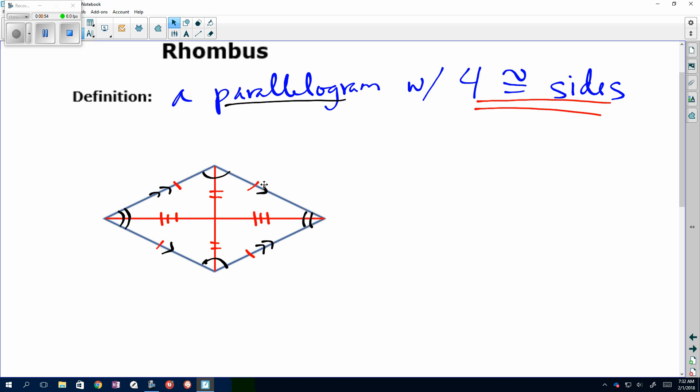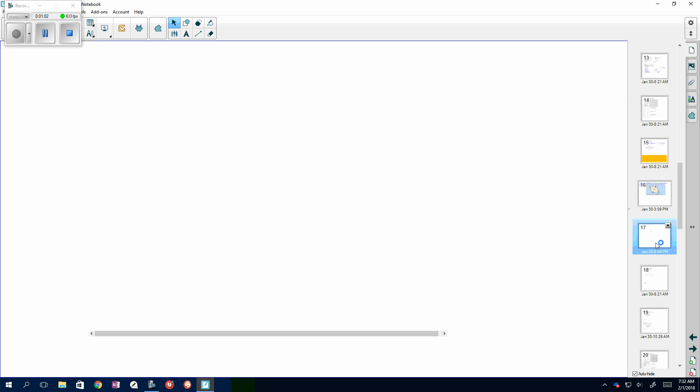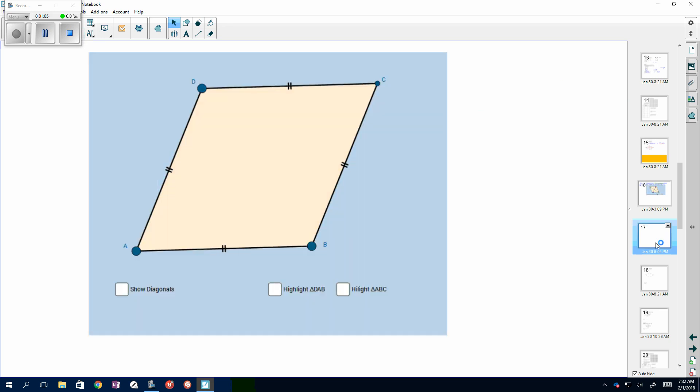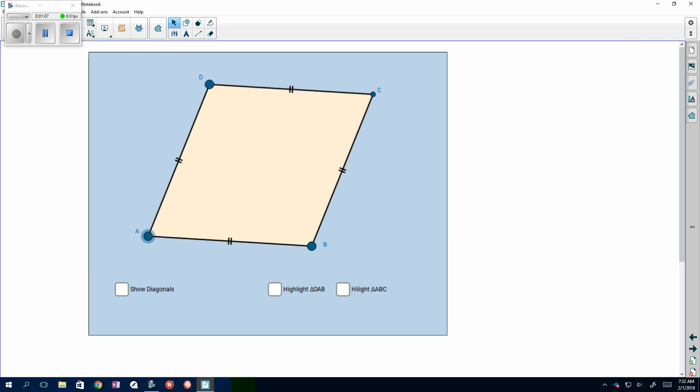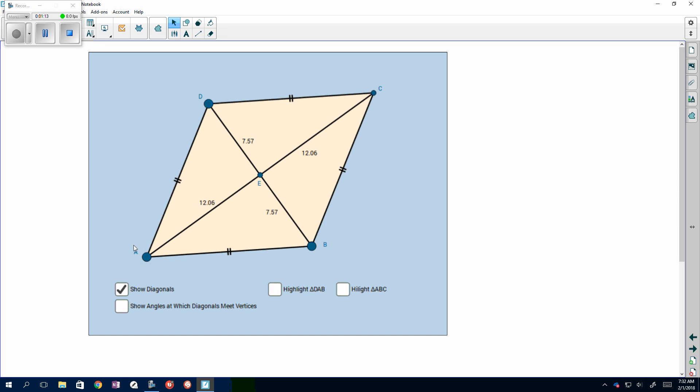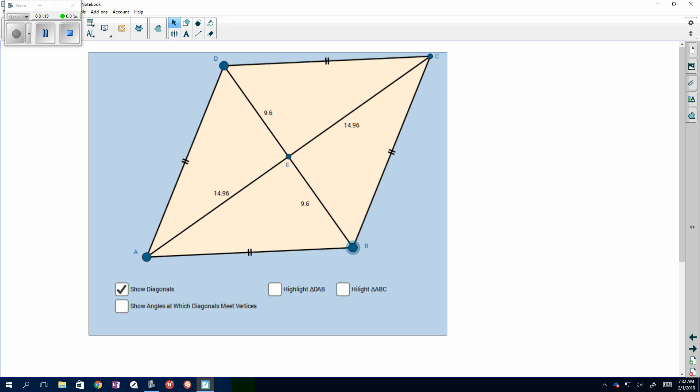Now, the thing that's a little different for a parallelogram, some additional properties, is if we look at this, we have four congruent sides. It's a parallelogram. I can move it, I can rotate it. I'm going to keep opposite sides parallel. If I show my diagonals here, I'm showing that they're bisecting, because I can see, I can change the side, 9.6, 4.96.